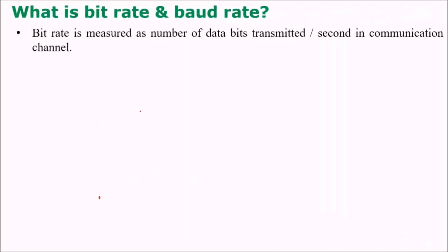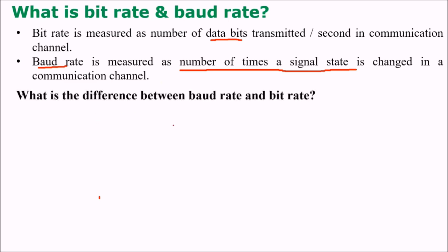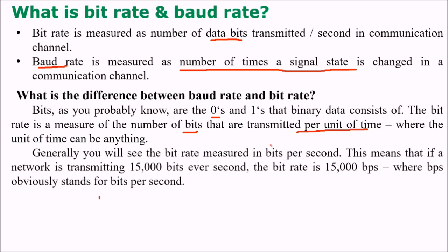What is bit rate and baud rate? Bit rate is measured as the number of data bits transmitted per second in a communication system, while baud rate is measured as the number of times a signal state is changed in a communication channel. Bit rate measures the number of bits transmitted per unit time, generally in bits per second. For example, if a network transmits 15,000 bits every second, the bit rate is 15,000 bps or 15 kbps, where kbps stands for kilobits per second.